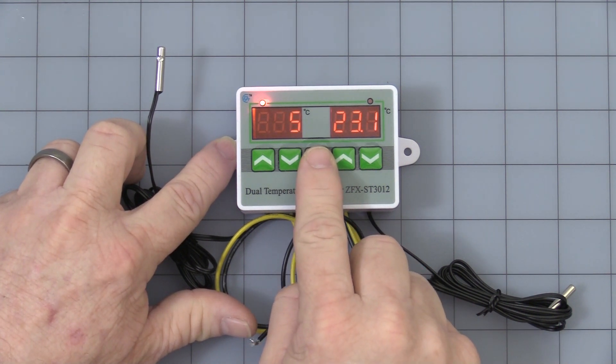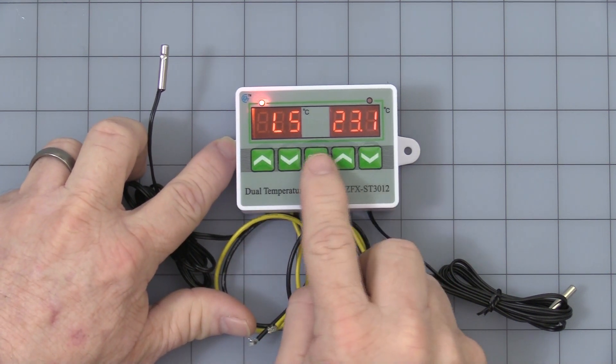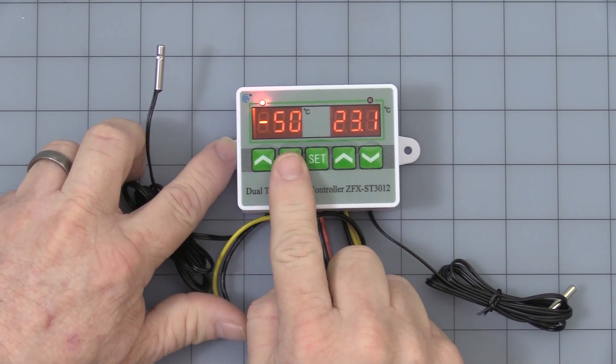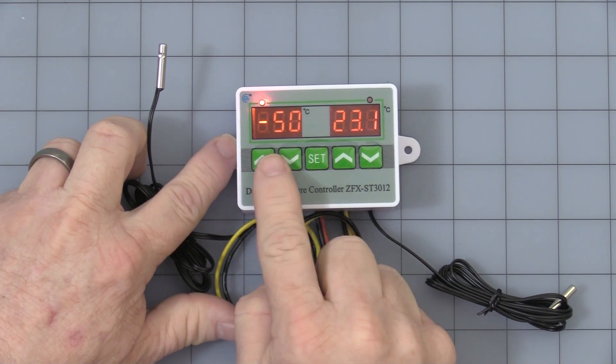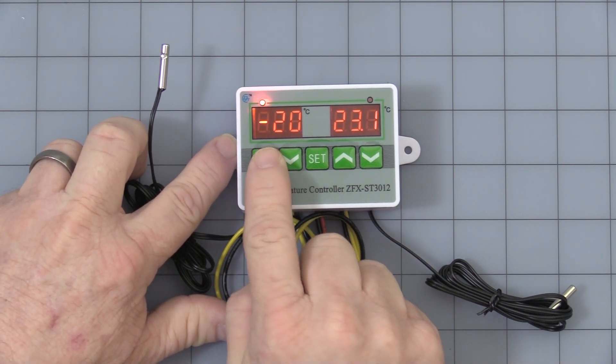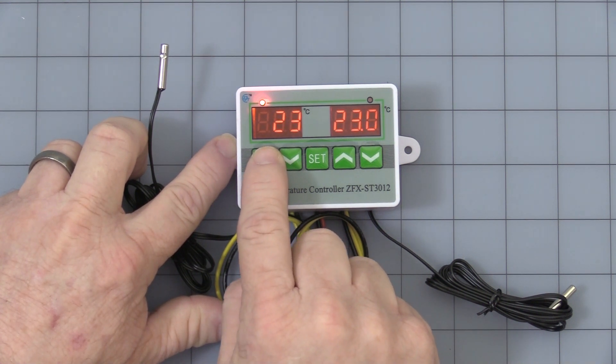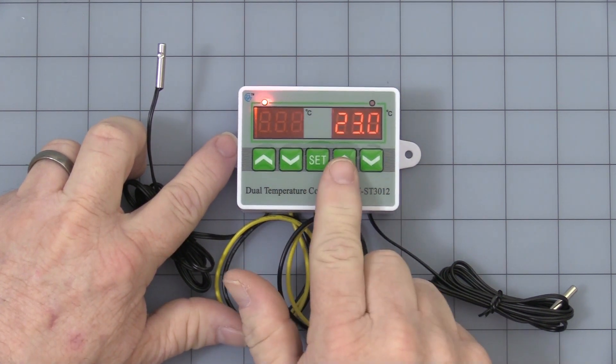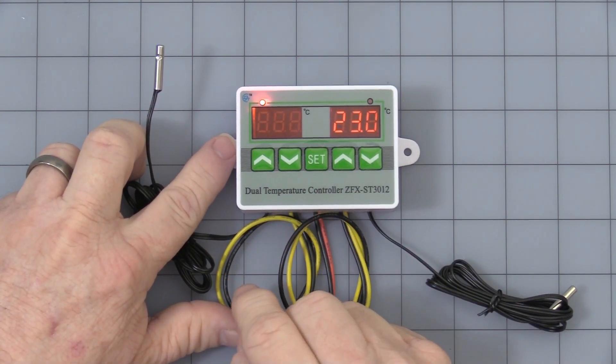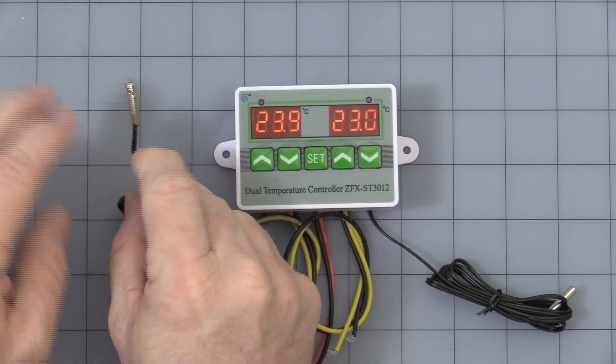Next setting is LS. Now LS, if I hit the set button, that is a low temperature alarm. It comes factory set at minus 50 degrees Celsius. Still in minus. Now if we run it up to say 23 degrees, there again, you leave that alone for a few seconds. When it stops flashing, it's back in the operation mode.